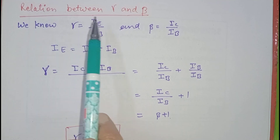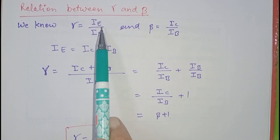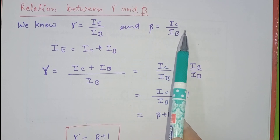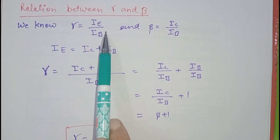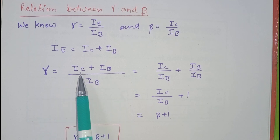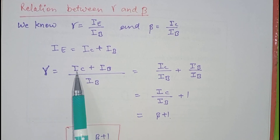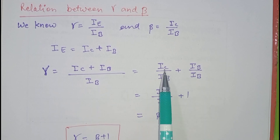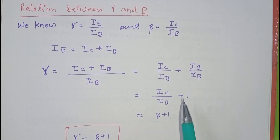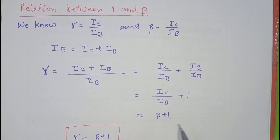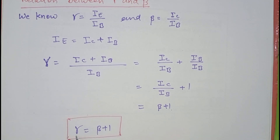Now we develop the relationship between gamma and beta. Gamma equals IE upon IB and beta equals IC upon IB, and IE equals IC plus IB. Substituting IE into the gamma equation gives gamma equals (IC plus IB) upon IB. Separating terms: IC/IB plus IB/IB, which simplifies to IC/IB plus 1. Since IC upon IB equals beta, gamma equals beta plus 1.